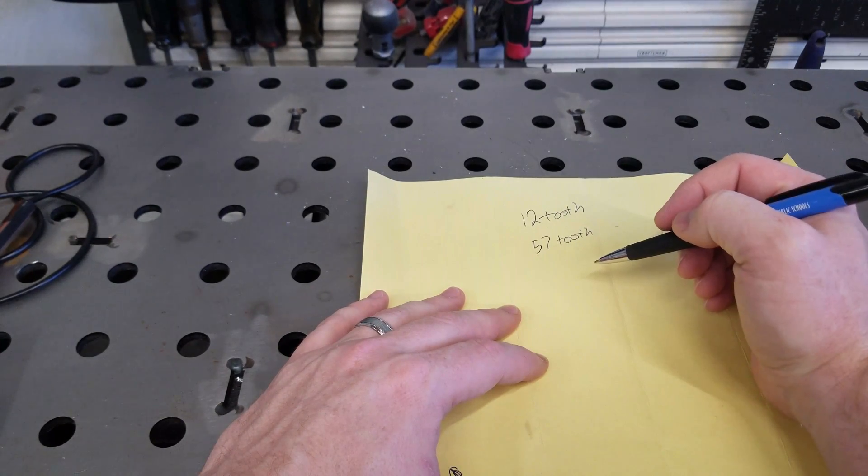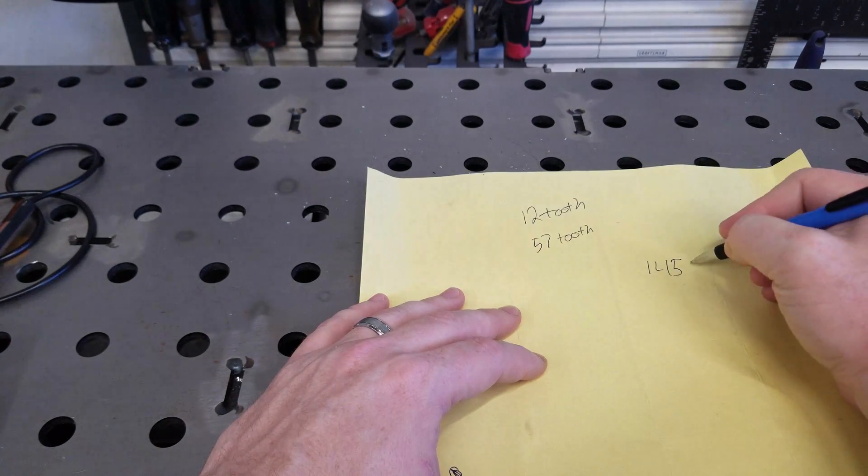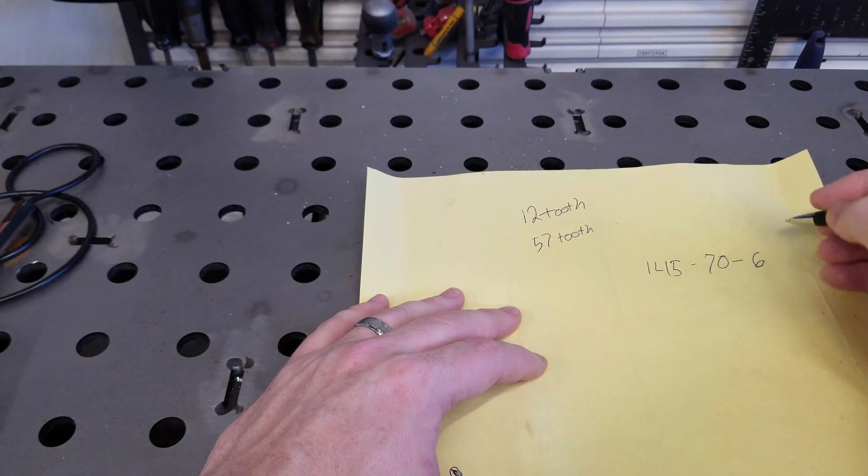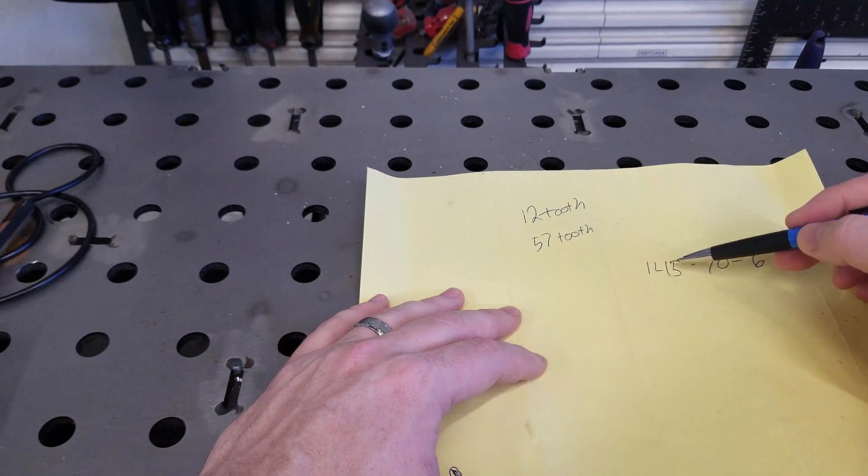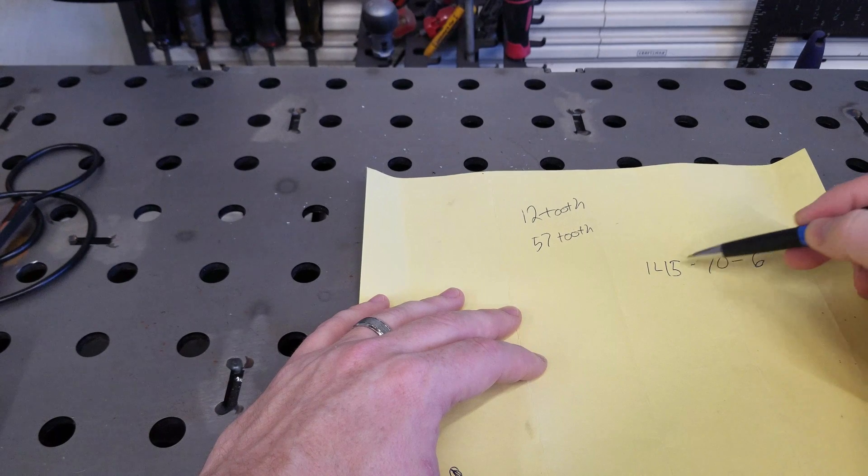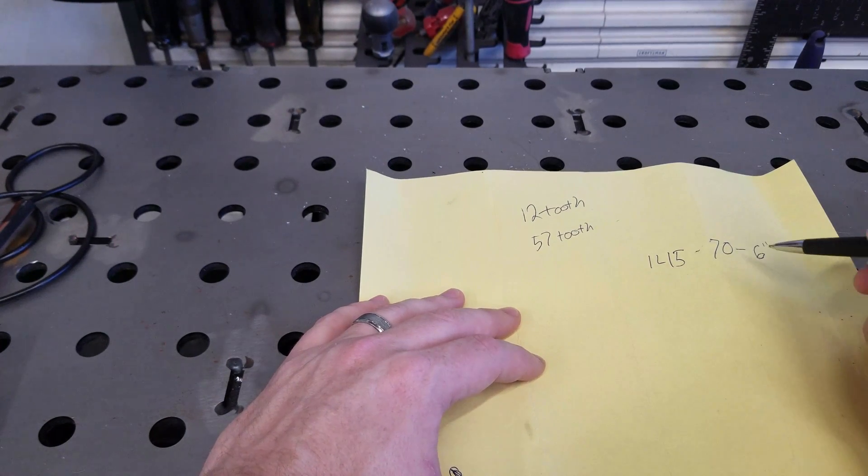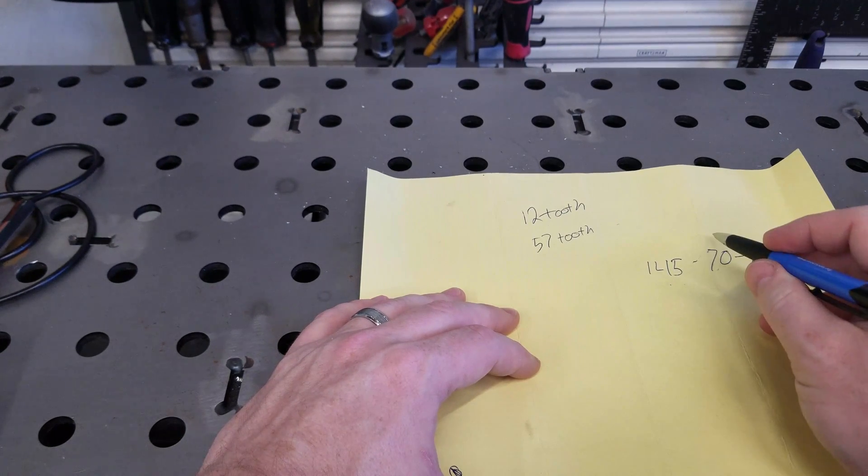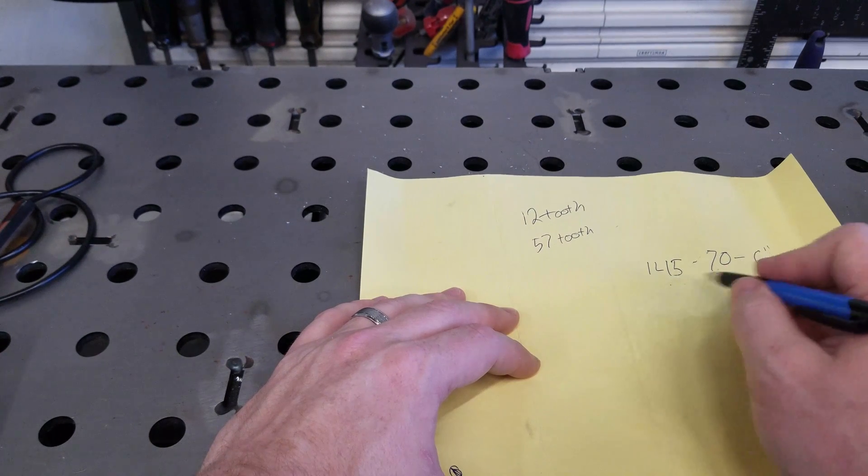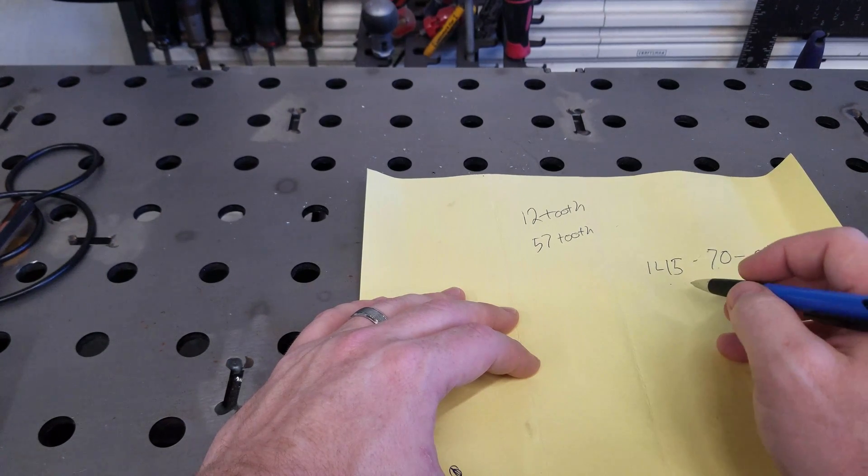All right, the next number we need to know is the diameter of the driven wheel. So in this case, we have a 145-70-6. That's a six inch rim. It's 145 millimeters wide. 70% of 145 is the height. If anyone has ever wanted to know what those numbers mean on a tire, there you go. It's your width, 70% of the width is the sidewall height, and then the size of the rim.